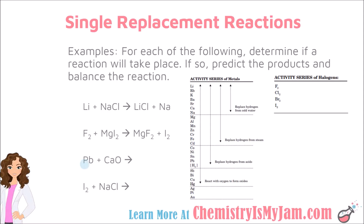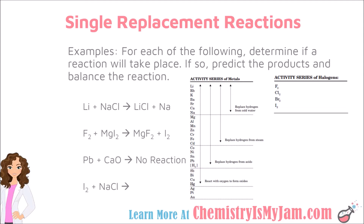In the next example, the element by itself is lead. Lead is a metal, so lead is trying to replace calcium. Both lead and calcium are in the activity series for metals. Lead is lower in the series than calcium, so lead does not have the ability to replace calcium. In this example, it is appropriate to simply write no reaction — this reaction would not take place, and you do not need to predict the products.